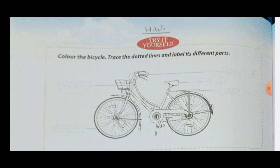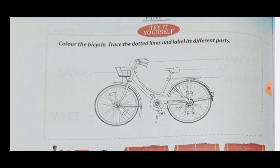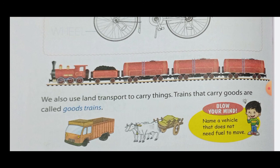Car, bus, train, bicycle, scooter, auto-rickshaw, truck, and van are examples of land transport. These vehicles move on wheels and can go everywhere on land. They are the most common method of land transport and we use them every day. We also use land transport to carry things — trains that carry goods are called goods trains.